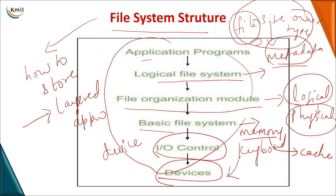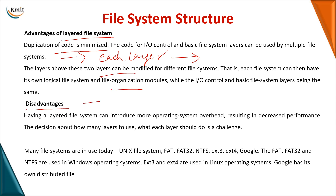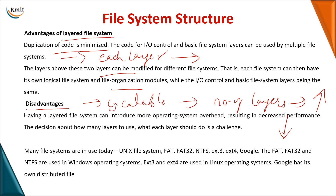To perform all these operations, you need an interface — an application program layer at the top. The advantage of this layered file system is that work is divided among different layers, minimizing code duplication. Each layer performs a different functionality, so modifying one layer does not affect the others. The disadvantage is that as the number of layers increases for scalability, functionality per layer increases, which decreases overall performance. Common file system structures include FAT32 and various Unix file systems.